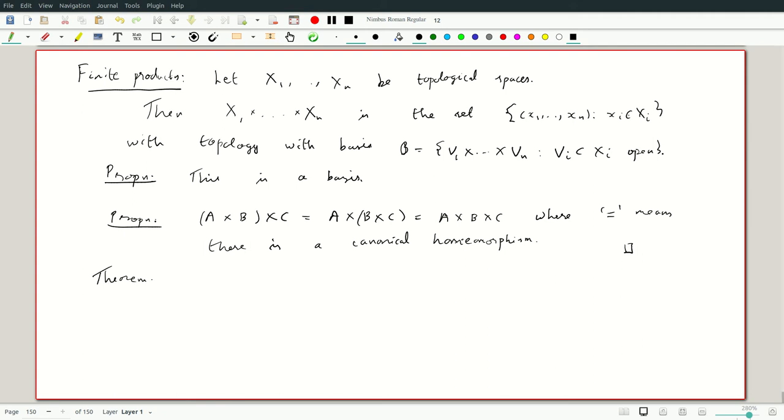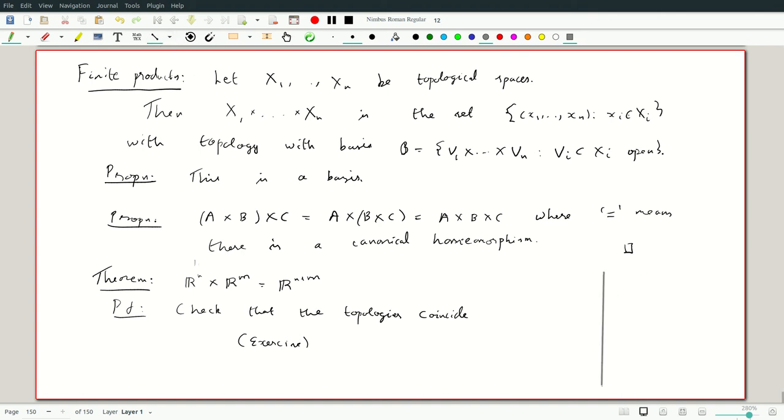Here is the theorem worth mentioning. Again, I am not going to prove in detail. Rⁿ cross Rᵐ equals Rⁿ⁺ᵐ. The proof is of course, there is a natural identification as sets. So, check that the topologies coincide. Since this whole course has been full of similar arguments, I will just say exercise and draw the picture in case of R cross R.